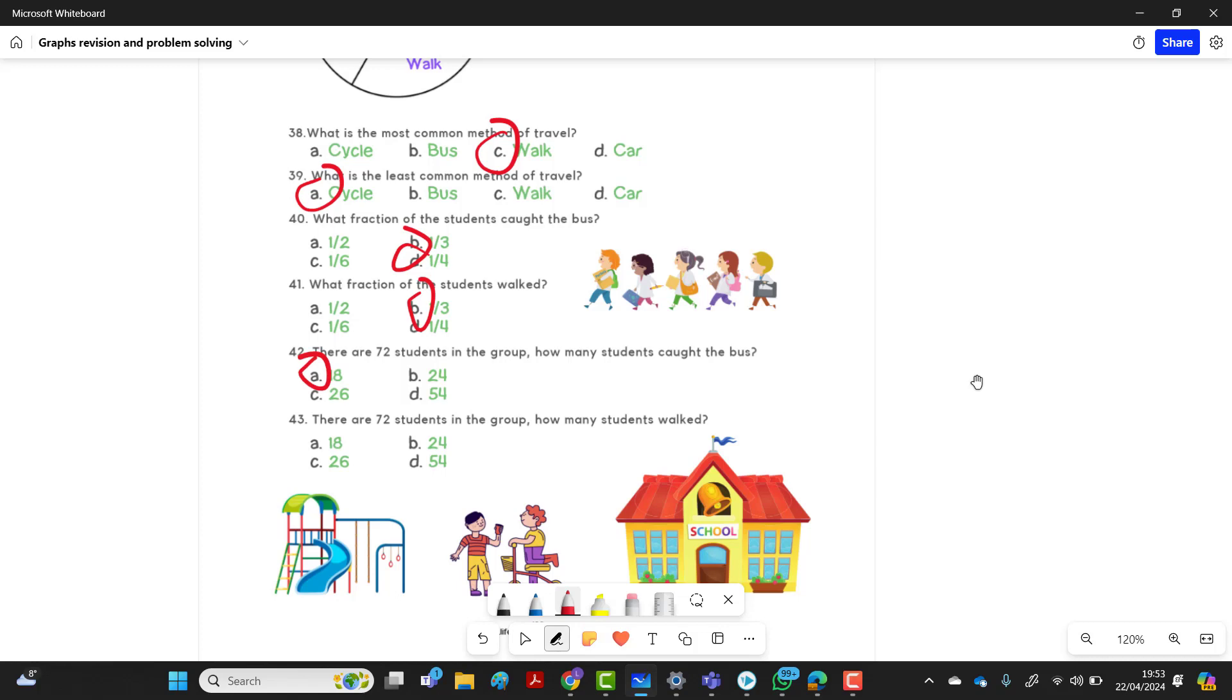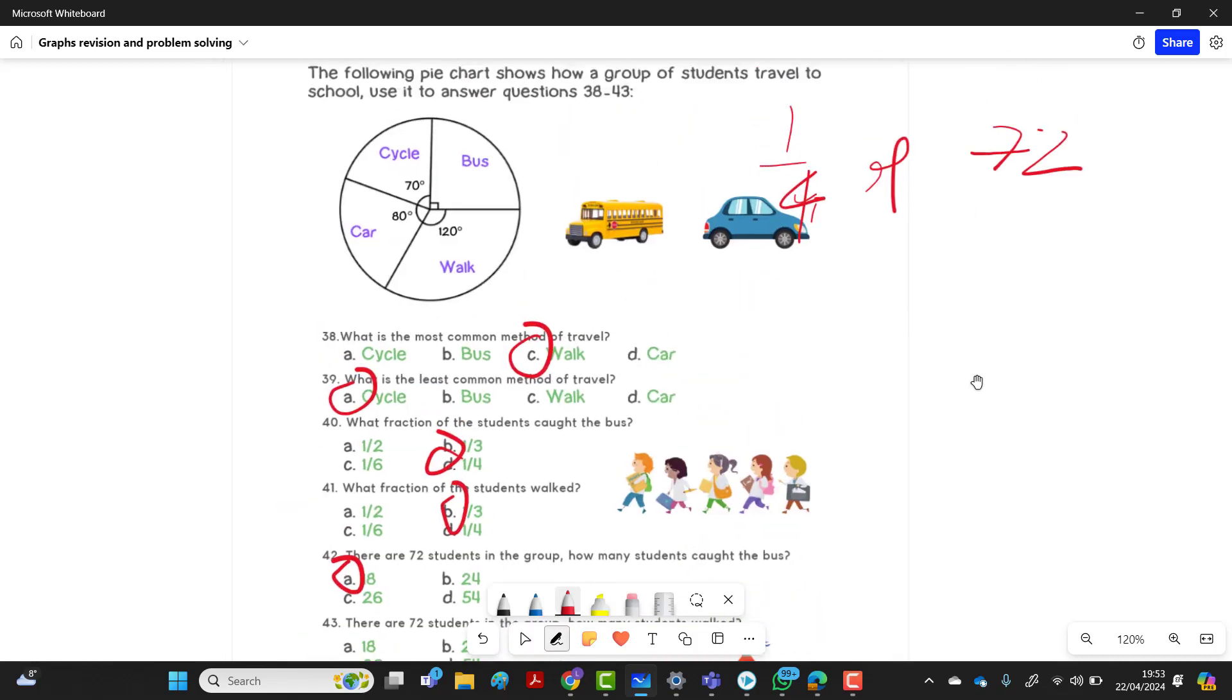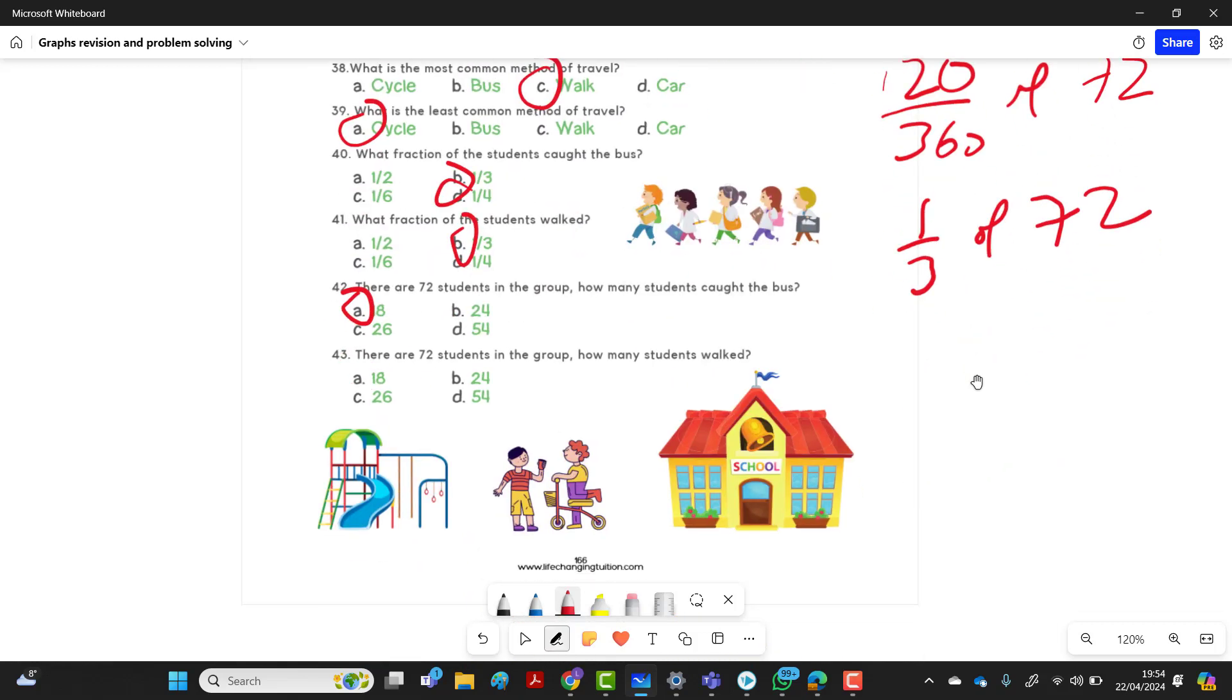How many students walk? Well, fractions, so it's 120 over 360 of 72, and we did it with 1/3 of 72. So it's 72 divided by 3. So it was 24. 43 is B.